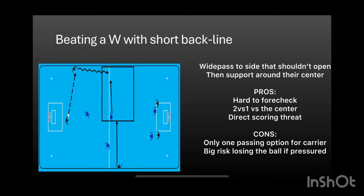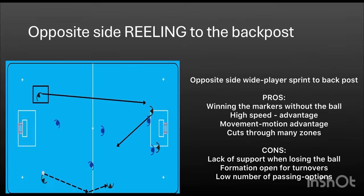The pros of this: it is rather hard to forecheck with a W-checking system, you will have a two-versus-one situation in the central line, and you will have a direct scoring threat. The cons: the low players in the back line will have a low amount of passing options, and there is a risk factor — if you lose the ball, your formation will be quite open for turnovers. Another aspect used frequently in top-level floorball: your opposite-side wide player sprints toward the back post — Vaxier from the SSL showed an example of how this can be utilized.